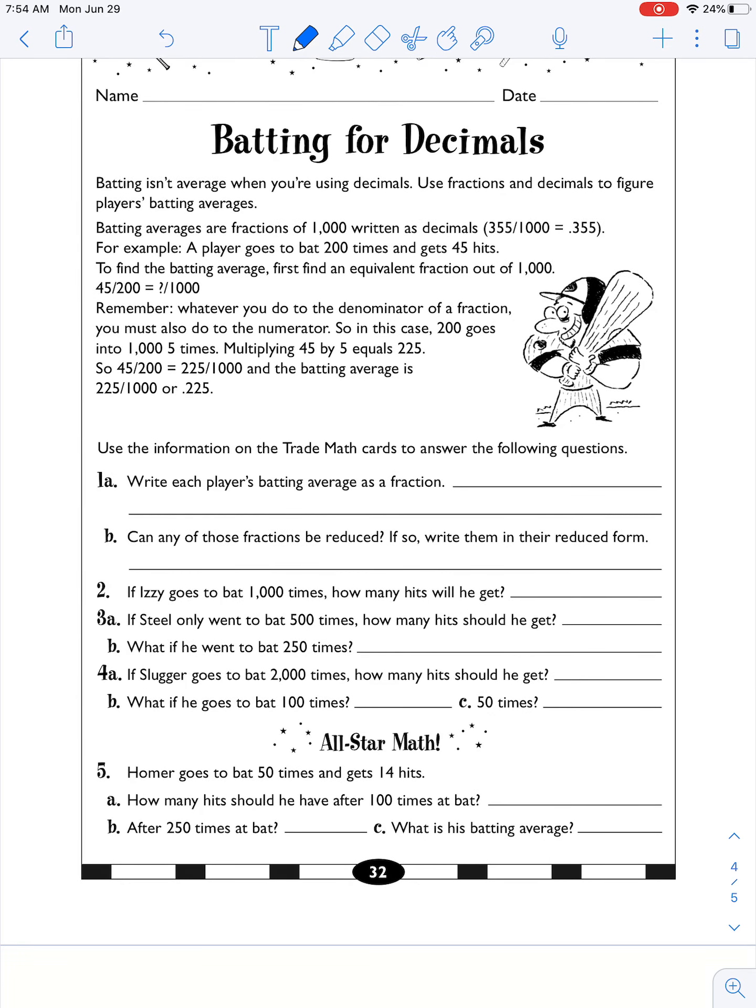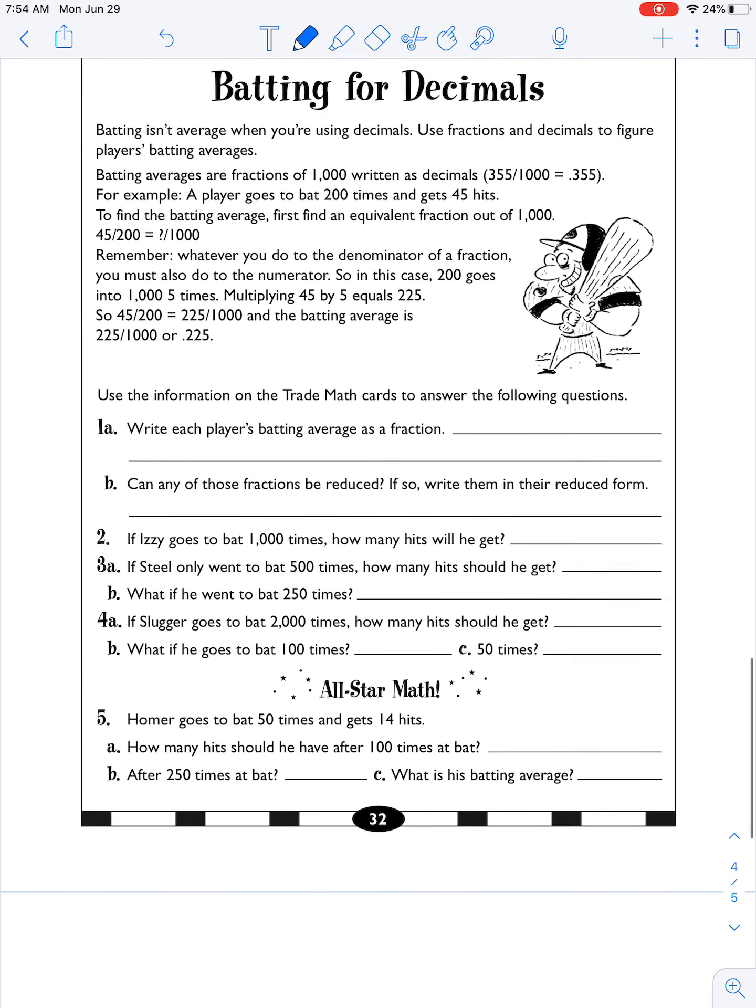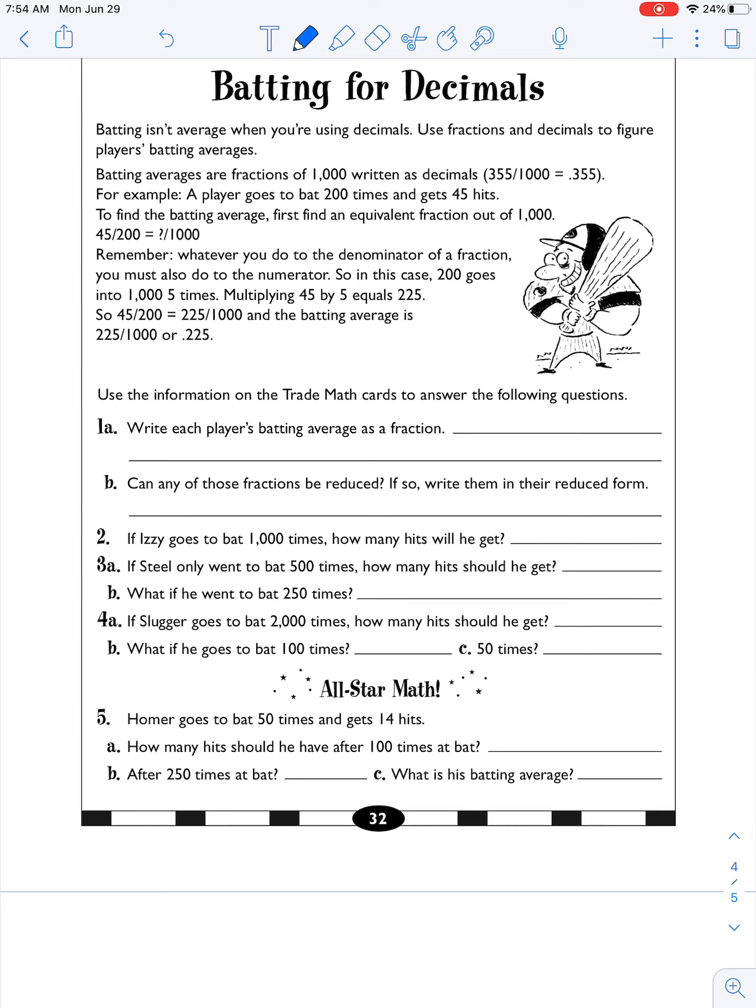Okay, now Batting for Decimals. All right, so for this one. Okay, this one takes a bit more work. So write each player's batting average as a fraction. Oh, did I not give us all of the information that we needed for this one? What? No, I think I did. Oh no, maybe I didn't, maybe there's another one. Okay let's see. Oh, I need to use these trade math cards. Oh no, I didn't give you the right pages. Ah okay, we'll have to do this today.